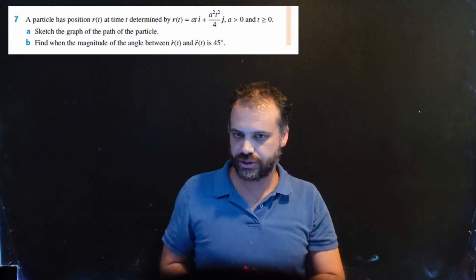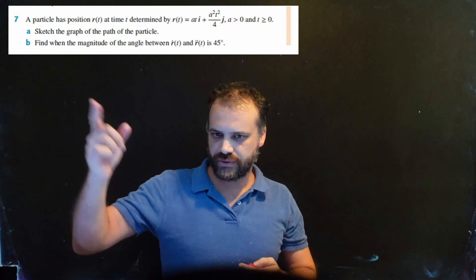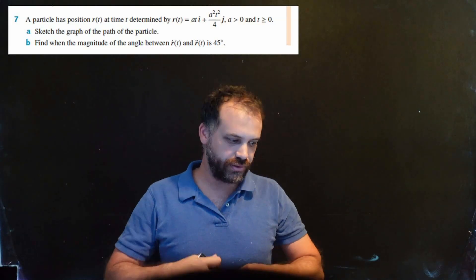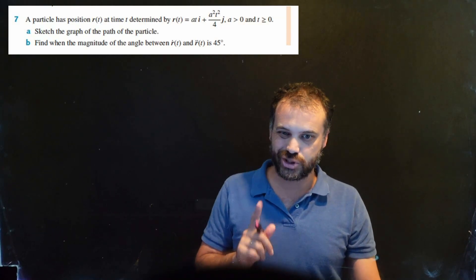So this is a great vector calculus question that I've been asked, so I'm going to jump into it and do it. Question 7a, sketch the graph of the path of the particle. Now 7a is not the interesting part, 7b is, so I'm just going to smash out 7a super fast.